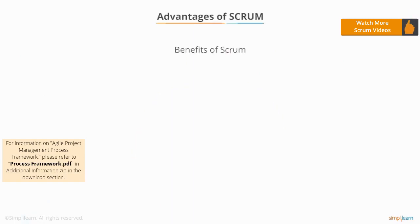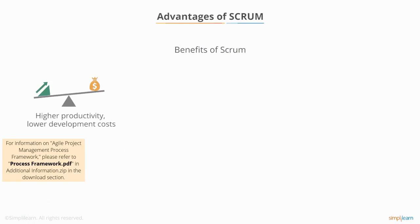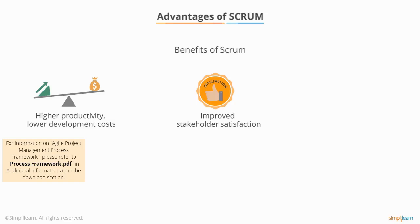Scrum is a proven Agile software development method providing significant benefits over the traditional waterfall approach. For example: higher productivity and lower development costs, accomplished by reducing waste and irregularities by only developing what is absolutely essential for the customer. Improved customer satisfaction — collaboration between developers and the customer results in clarity about what is to be developed and the ability to respond to changing needs and priorities. Higher quality software, using techniques like test-driven development, continuous integration, acceptance test-driven development, and refactoring, can lead to nearly defect-free software.